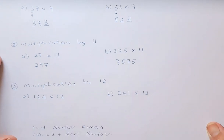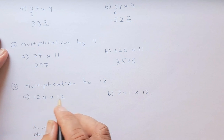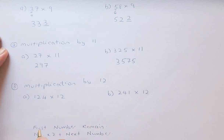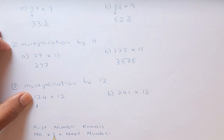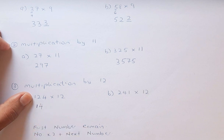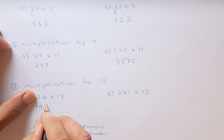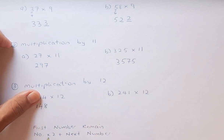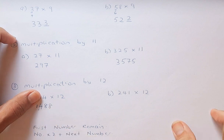Now multiplication by 12, which is slightly different. For 124 times 12: the first number, 1, remains. Then each digit is multiplied by 2 and added to the next digit — 1 times 2 is 2, plus 2 is 4; 2 times 2 is 4, plus 4 is 8; 4 times 2 is 8 with no following digit. So the answer is 1,488.